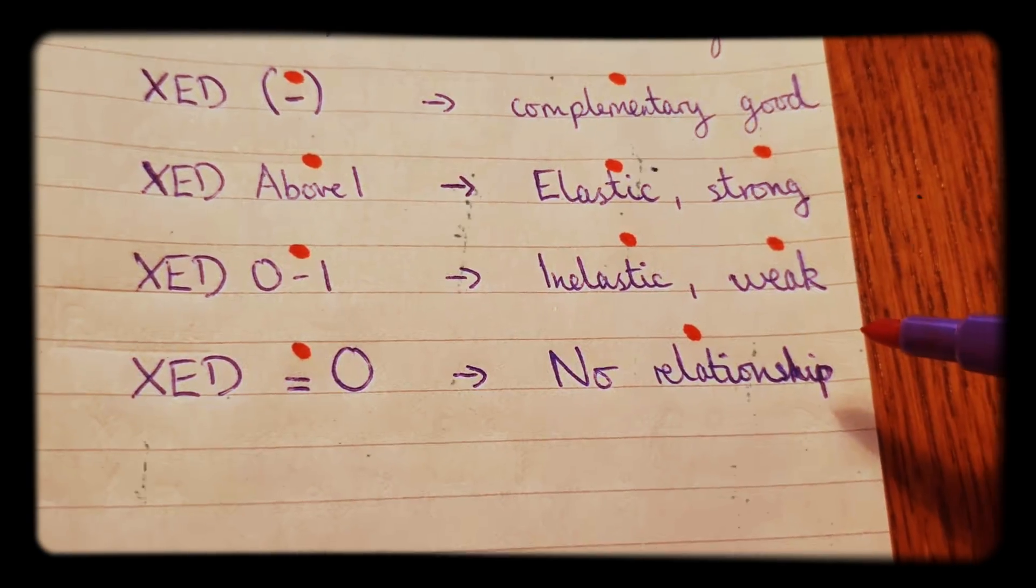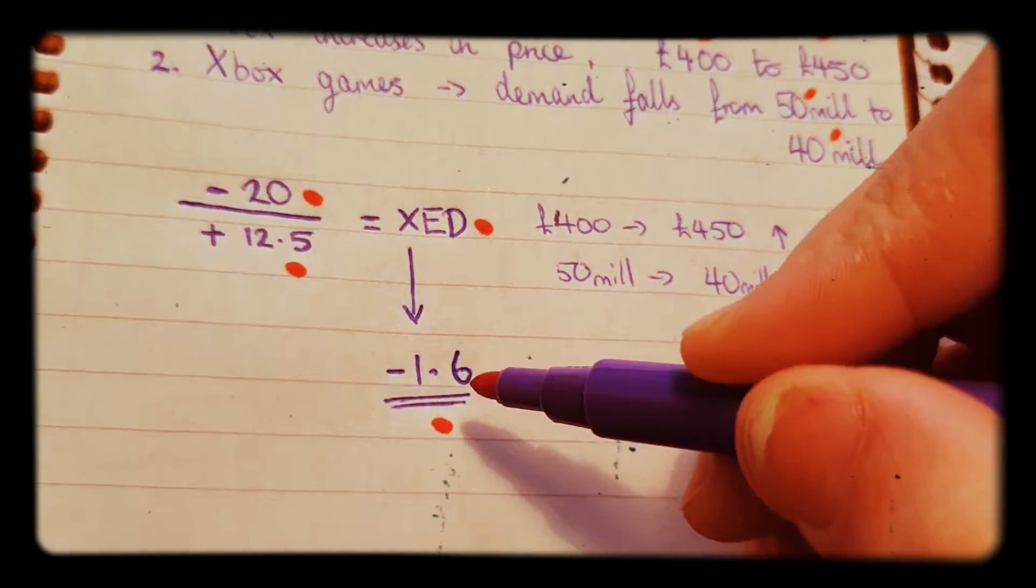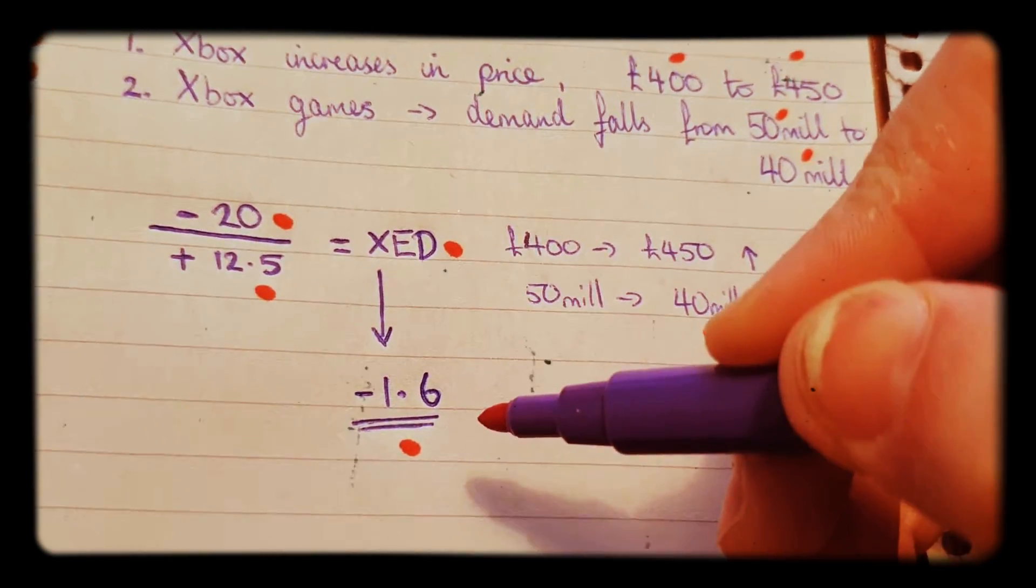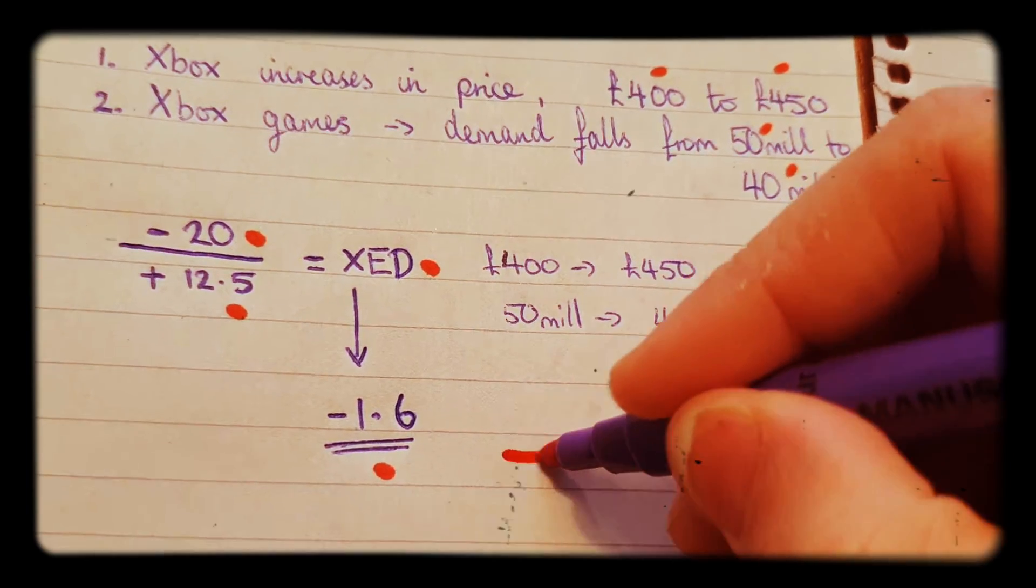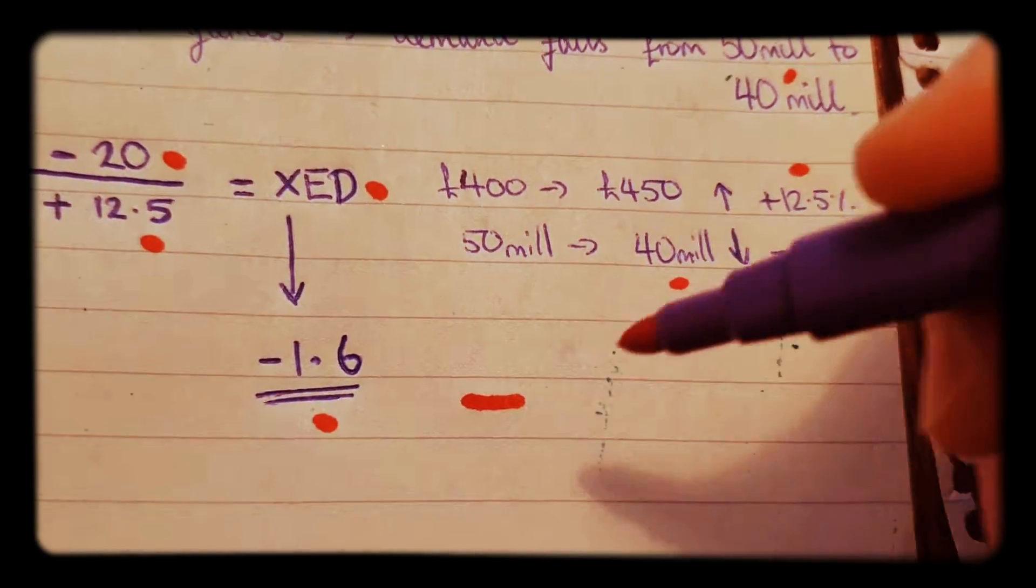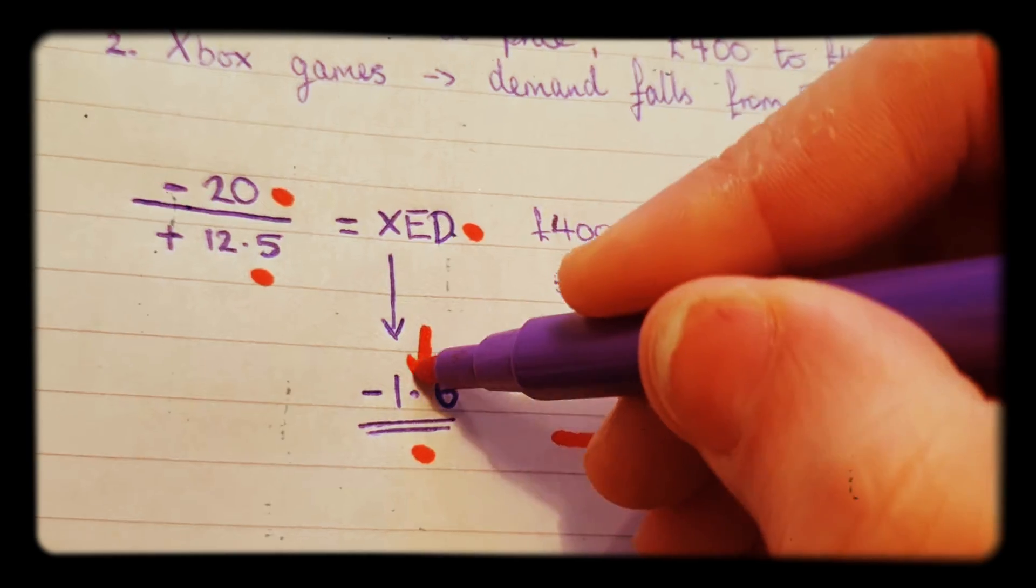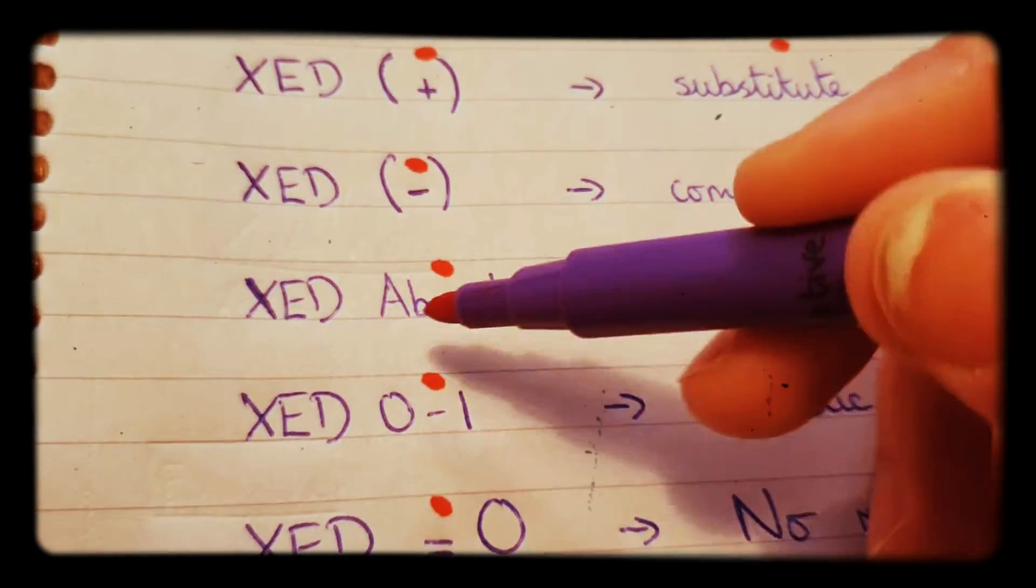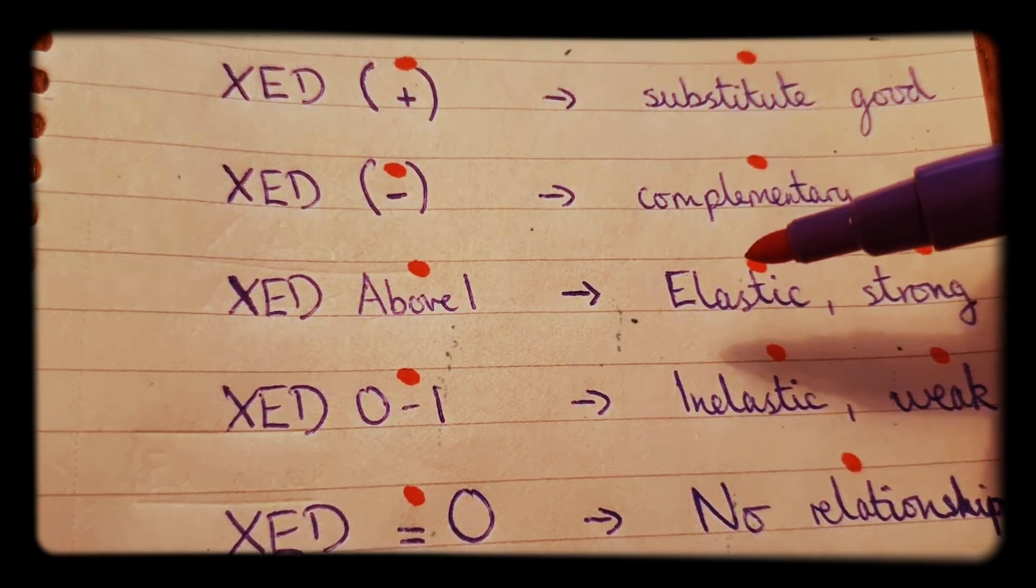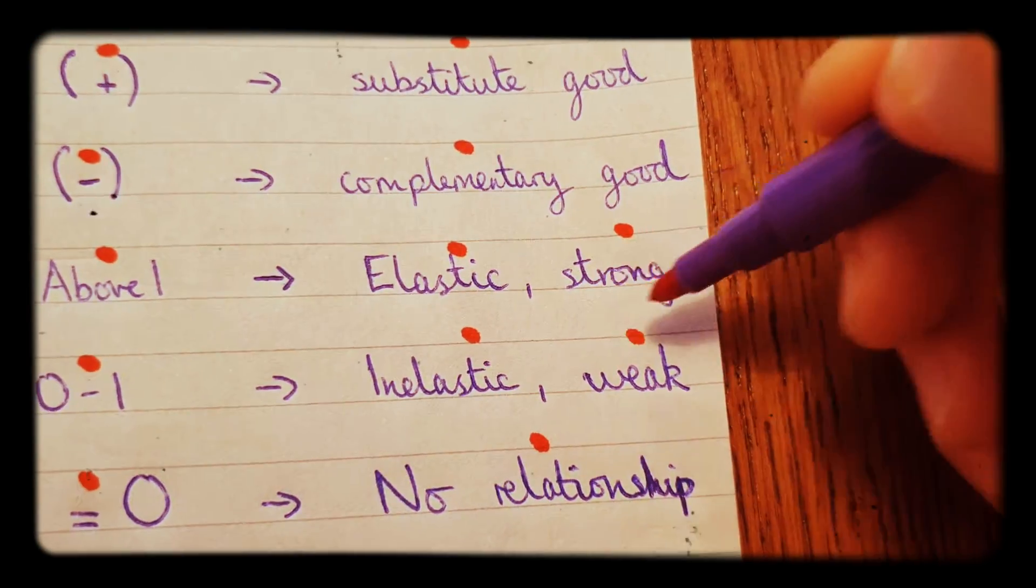There's no relationship between the two goods. So let's apply that to this example here: minus 1.6. It's negative, which means it's a complement. And look at the value—it's 1.6, which is above 1. Therefore, it's a strong complement.